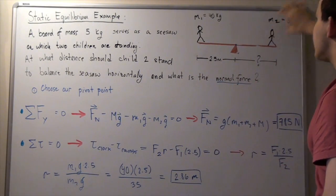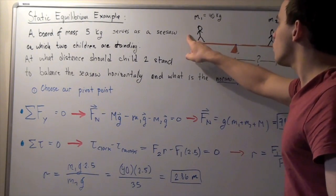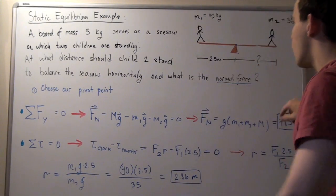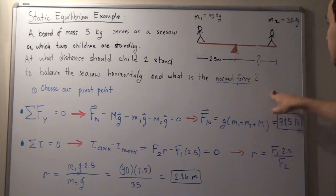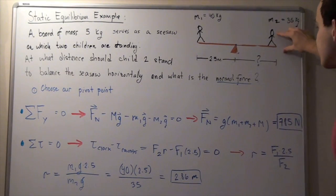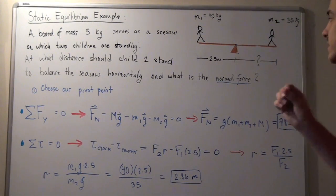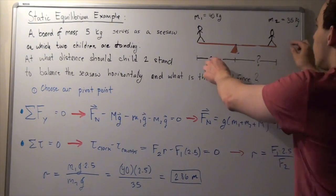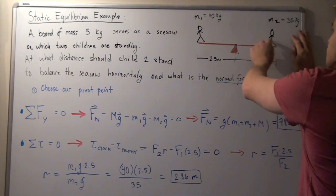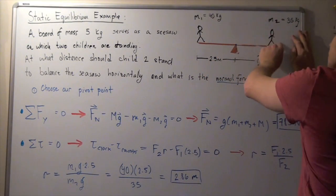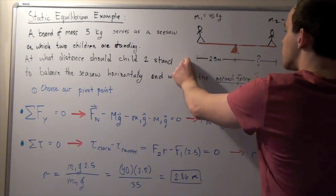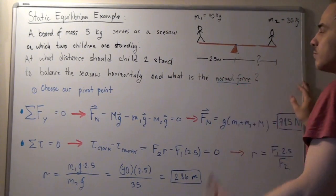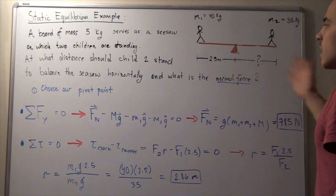Note that if I take child 2 away, our board will rotate one way. If I take child 1 away, our board will rotate the other way, because there is a mass on one side and no mass on the other. We simply want to find the point along which we should place child 2 so that our board is not rotating in any direction and is not moving vertically or horizontally.